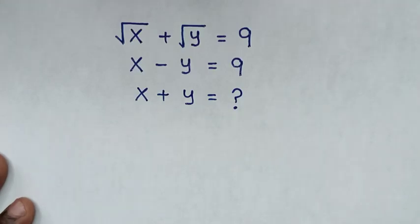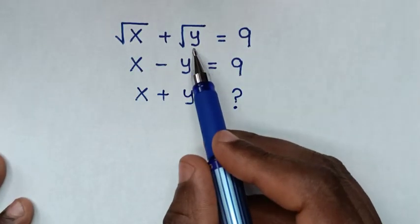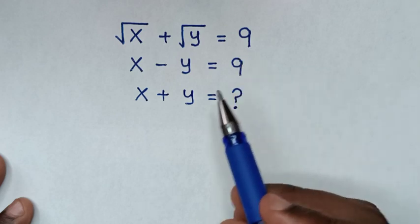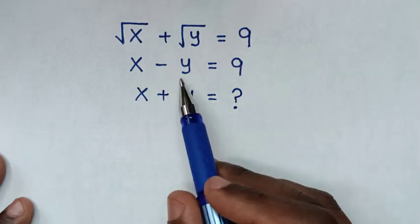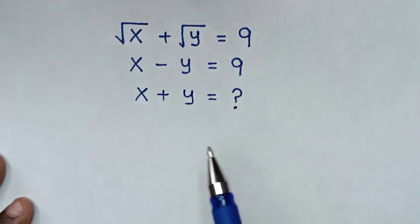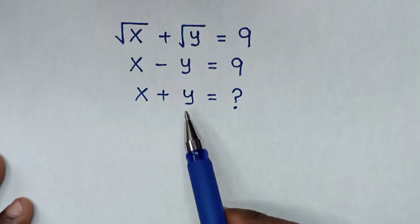Hello! How to solve: square root of x plus square root of y is equal to 9, and x minus y is equal to 9. We need to find the value of x plus y.